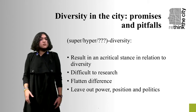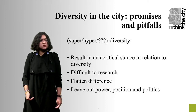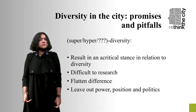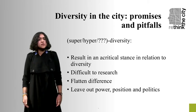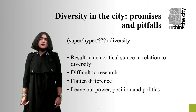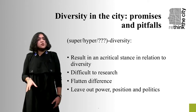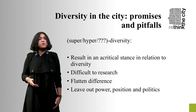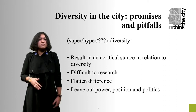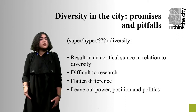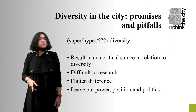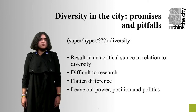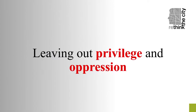The absence of power therefore results in an acritical stance in relation to diversity, which addresses difference only at the level of an individual and leaves out the collective experience of systemic discrimination and inequality. In a nutshell, a one-dimensional understanding of diversity allows for the recognition of one category at a time, while multi-dimensional diversity frameworks such as super-diversity and hyper-diversity address different categories at once. Both approaches, however, fall short in addressing privilege and oppression since they do not take into account the intersections of different categories.